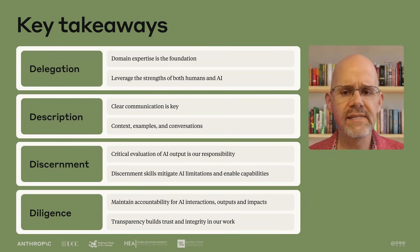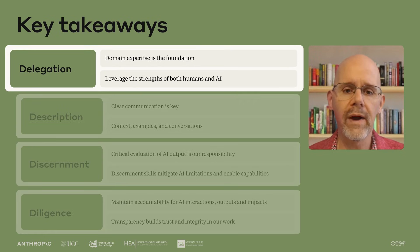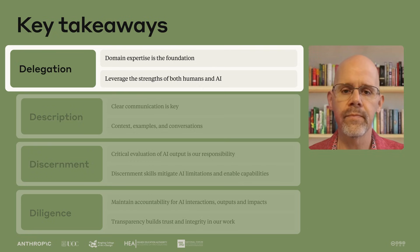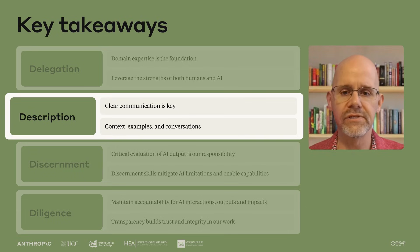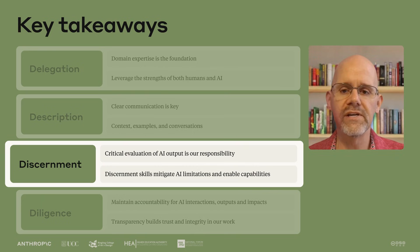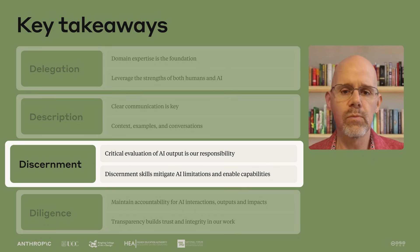As you move forward in your AI journey, keep these essential insights in mind. For delegation, your expertise and judgment remain the foundation of effective AI use. The most powerful outcomes often emerge when you can identify opportunities where you and AI can build on each other's strengths through iterative collaboration, creating outcomes neither could achieve alone. For description, clear communication bridges your intentions and AI capabilities. Sometimes the most effective instructions aren't elaborate prompts, but thoughtful conversations that provide context, examples, and feedback. For discernment, critical evaluation of AI outputs is a non-negotiable responsibility. Your discernment skills protect against AI limitations and enable you to achieve results neither you nor the AI could easily create alone.